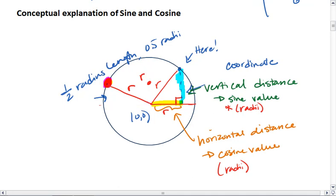Horizontally, we're clearly more than half a radius length. And this number actually turns out to be root 3 over 2, giving us the coordinates negative root 3 over 2 comma 1 half.